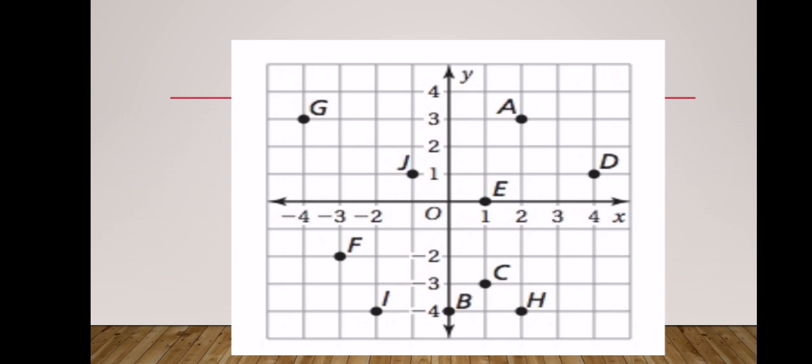To determine the coordinates of point E: starting from the origin, the first movement is along the x-axis — you move one place to the right, so the x-coordinate is 1. The second movement is along the y-axis, but you are not moving any distance vertically, so the second coordinate is zero. Therefore, the coordinates of point E are (1, 0). This also means that any point lying on the x-axis has a y-coordinate of zero.